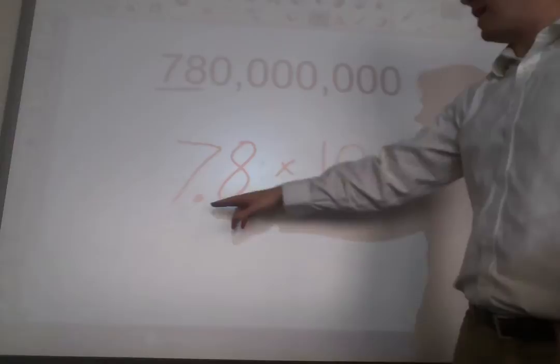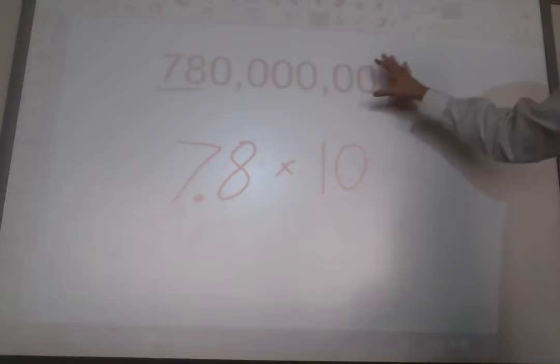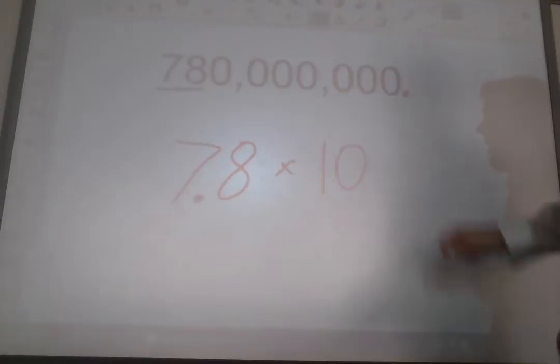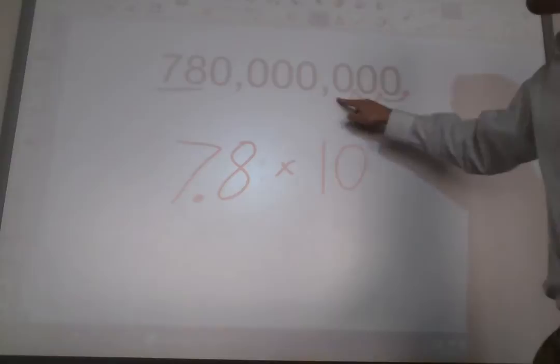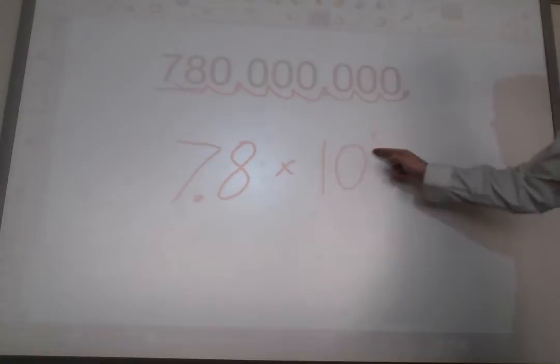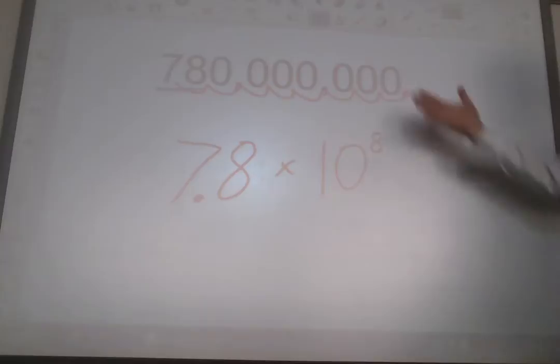To figure that out, all you do is look at our original number. Look at the 7.8 and ask yourself, how many times did the decimal have to hop from the original number to get here? Let's count. Remember, in this original number, if you don't see a decimal, the decimal's at the end. How many times did it hop to get between the 7 and the 8? 1, 2, 3, 4, 5, 6, 7, 8 times it had to move. 8 is our exponent. So, 7.8 times 10 to the 8th power. That's how you write it.